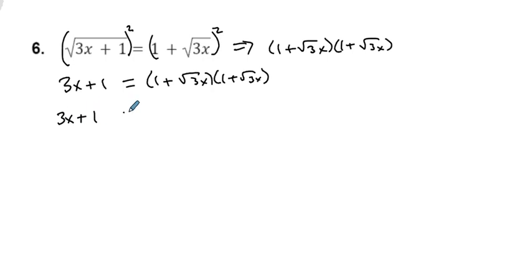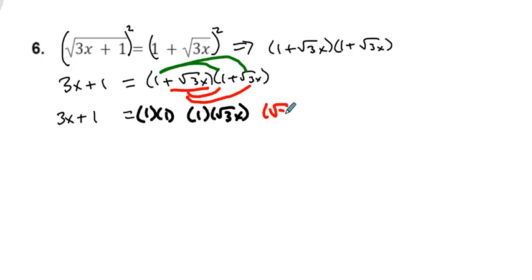So we get 3x plus 1 is equal to, so we're going to take, I'm going to do green for this. So we do these, and then we're going to take this and we're going to do these. All right, so we're going to go 1 times 1. Wow, that's so chunky. And then 1 times the square root of 3x. Okay, now I'll do red. Sorry, I get lazy and don't want to make it the thin one. So we got square root of 3x times 1, and then the square root of 3x times the square root of 3x. All right, so this is what we have.